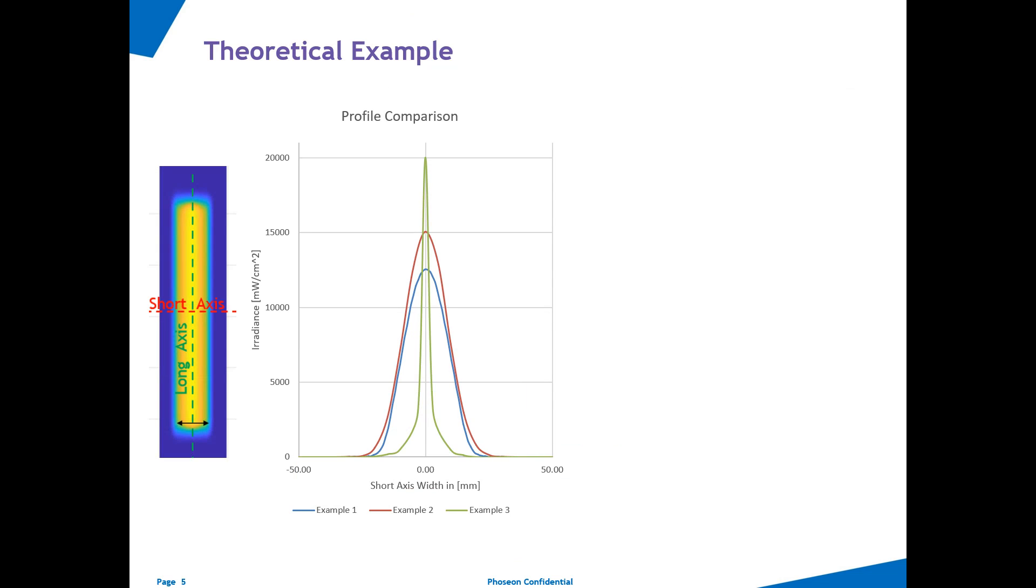So, is this black magic? Is Phoseon underrating their peak irradiance or worse? Are competitors lying on their spec sheets? No, I don't think either is the case.